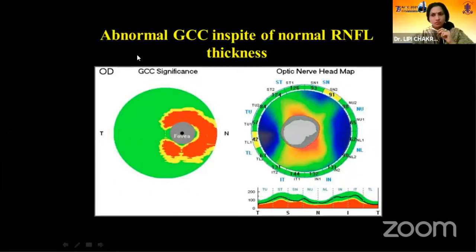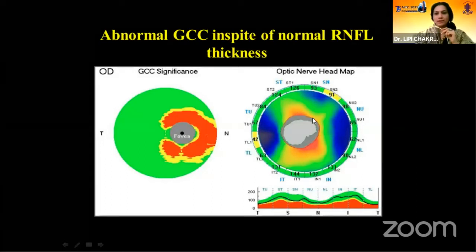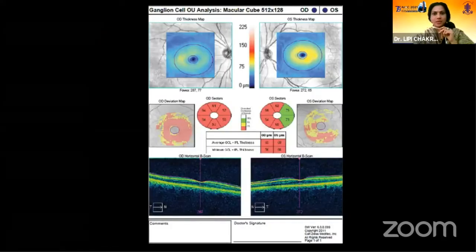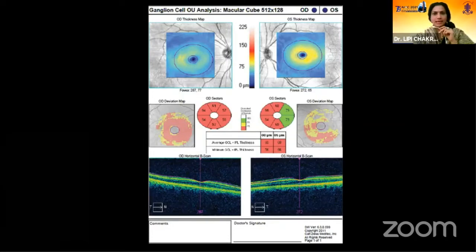Where do we have the use of GCC? Here is an example of normal RNFL thickness around the optic nerve — all warm colors, yellow and red, and the curve is in the green zone. RNFL thickness appears normal. But when we see the significance map of GCC, there is a red zone around the fovea, implying loss of ganglion cells. So this might be glaucoma — this is where GCC helps us. This is the ganglion cell OU analysis report.